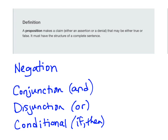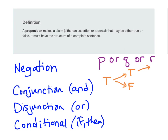Now let's look at a disjunction where we have three different statements — P or Q or R. How many rows would we have in a truth table? Let's use the convention of true before false and list out all of the options. If P is true, then Q could either be true or false, and in either of those cases, R could also be true or false.